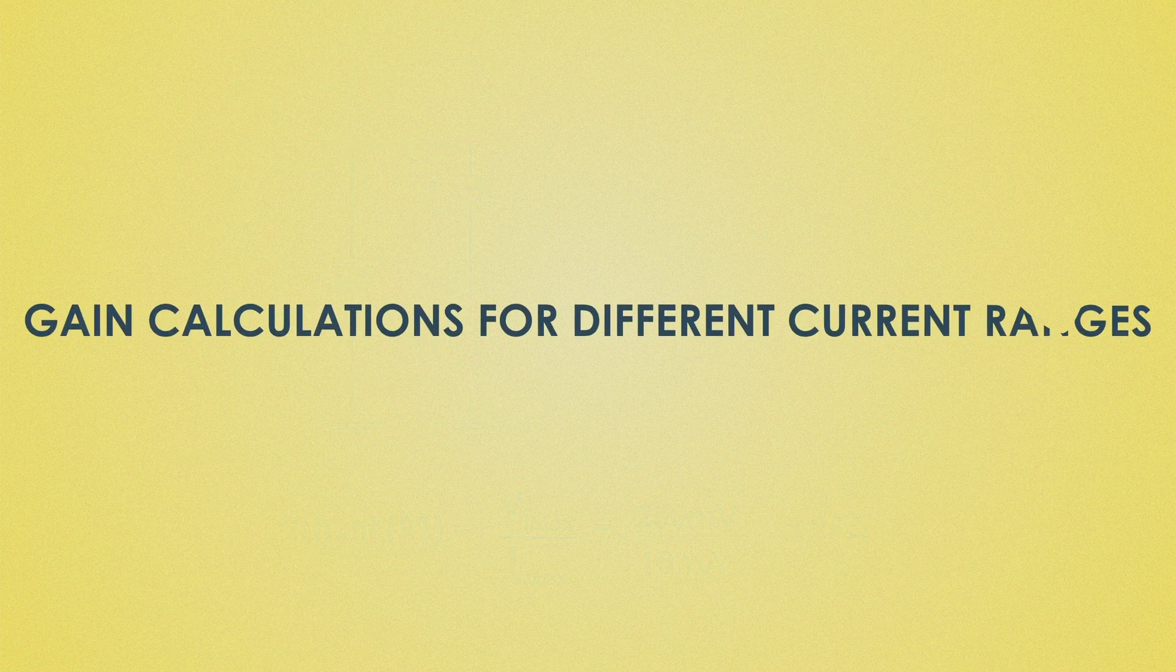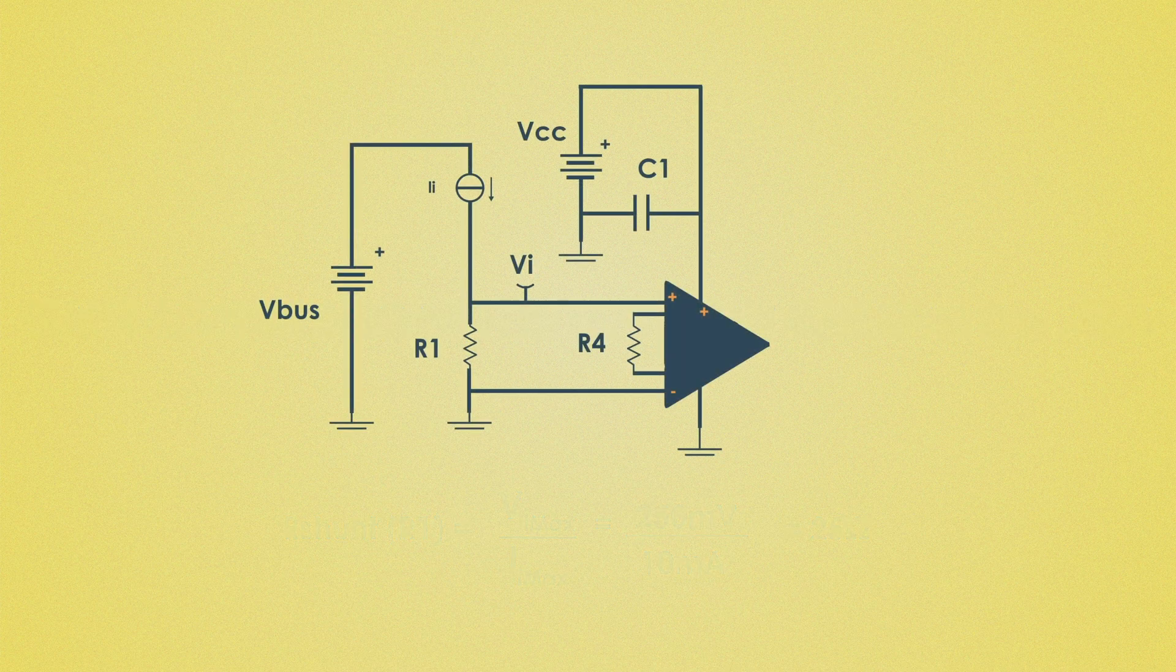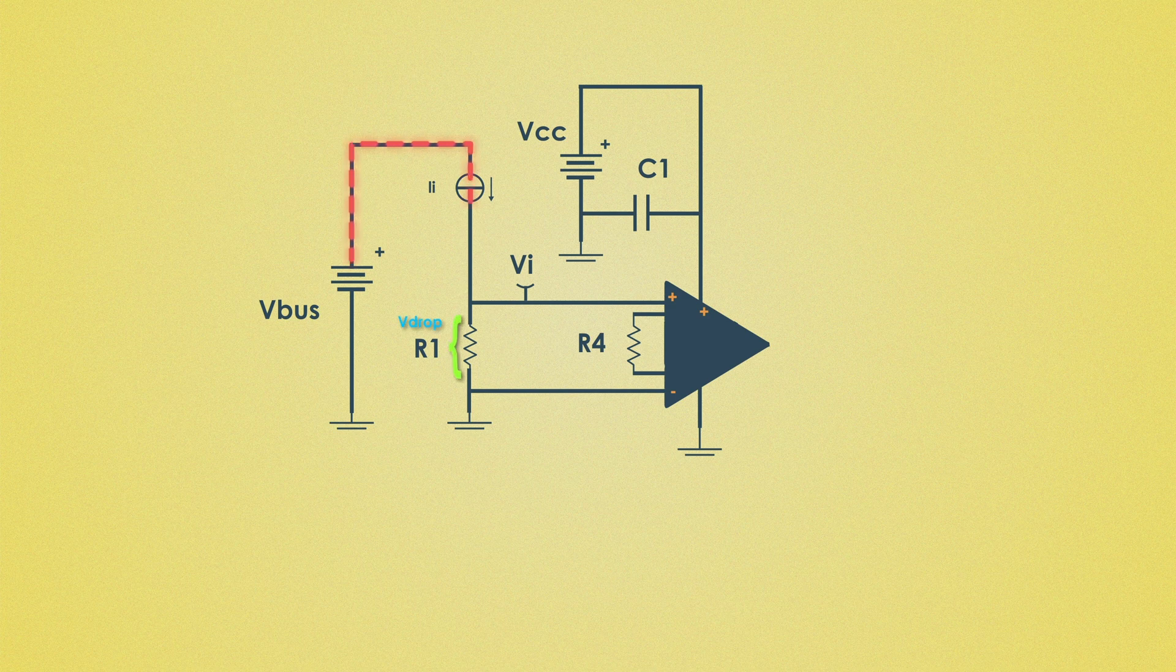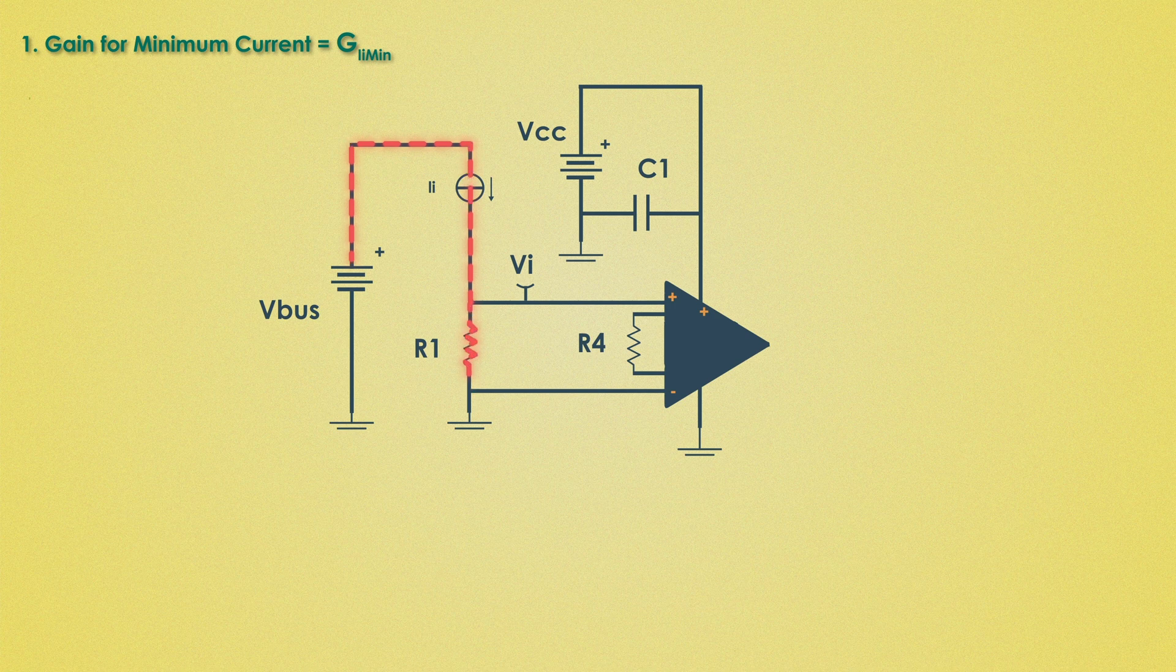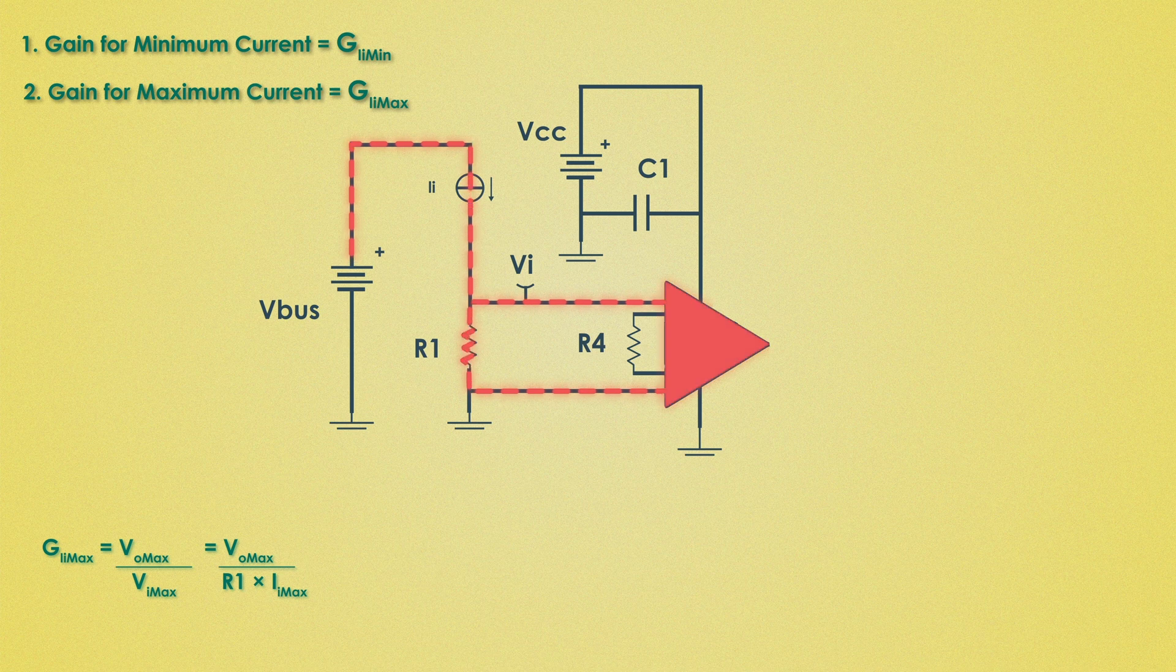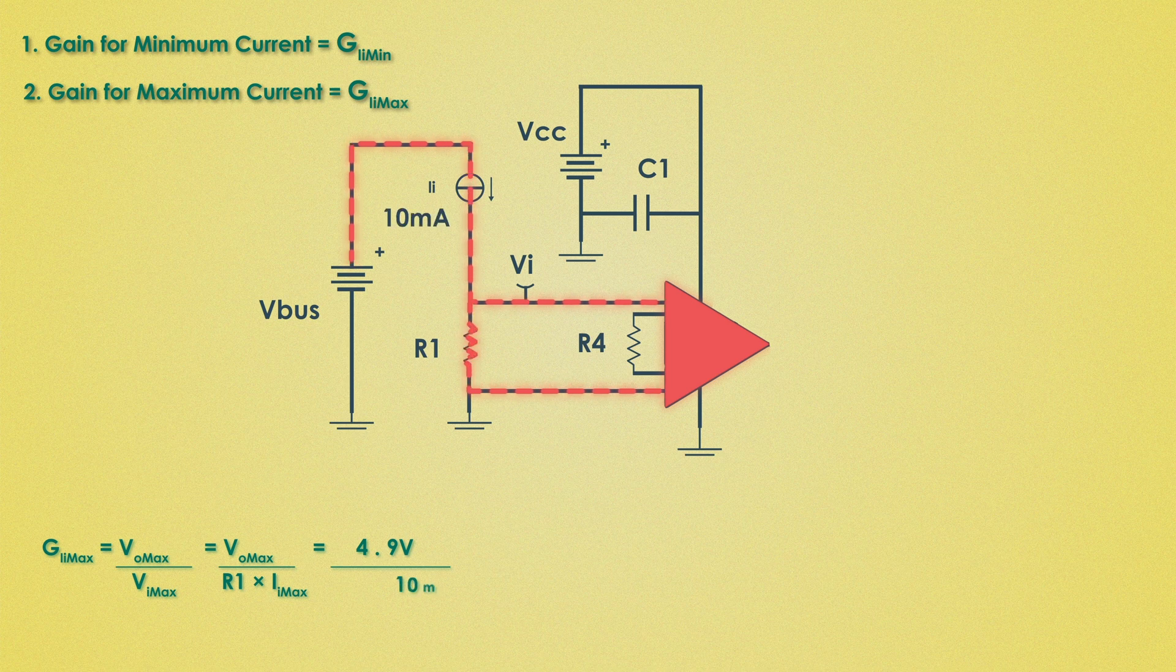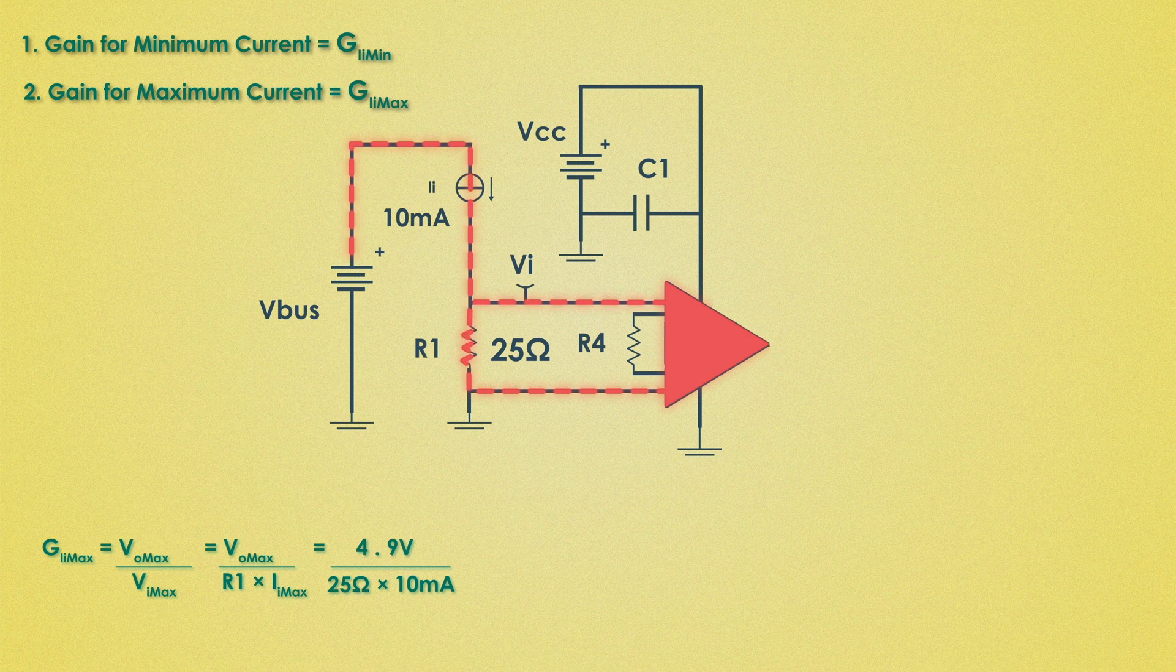Gain calculation for different current ranges. The circuit must amplify the voltage drop across R1 to fit within a usable range for further processing. Two gain settings are calculated. One for minimum current and another for maximum current. Gain for maximum current will be calculated by this formula. Vo_max is the maximum output voltage which is 4.9 volts. i_max is 10 milli amperes and R_shunt is 25 ohms. So the gain for maximum current is 19.6.